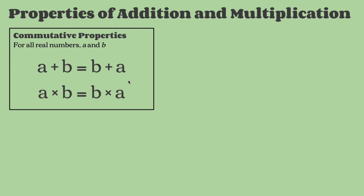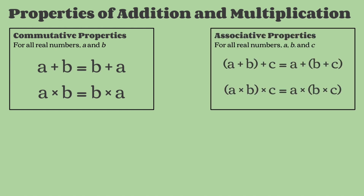So here we have a plus b equals b plus a, and a times b equals b times a. If we substitute these with numbers — let's say a equals 2 and b equals 3 — we'd still get the same outcome. So 2 plus 3 equals 5, and 3 plus 2 also equals 5. And 2 times 3 equals 6, and 3 times 2 also equals 6. So this property checks out.